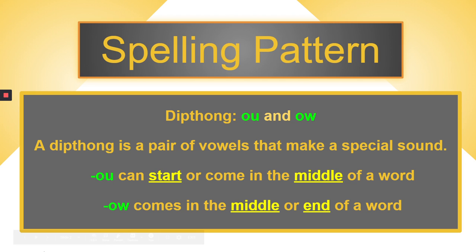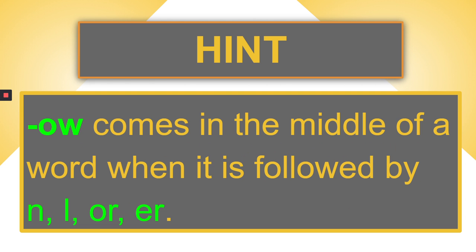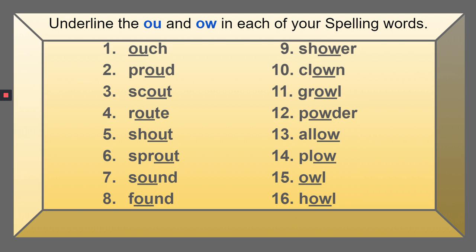We're going to review our spelling pattern — the OU and OW sound that share that special sound of 'ow.' Remember our hint: OW comes in the middle of a word when it is followed by N, L, O, R, or ER. Numbers 1 through 8 are spelled with the OU sound and numbers 9 through 16 are spelled with the OW sound.